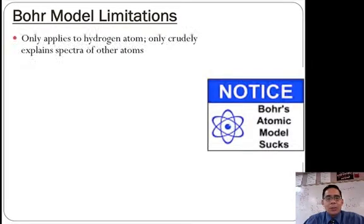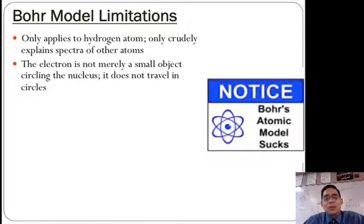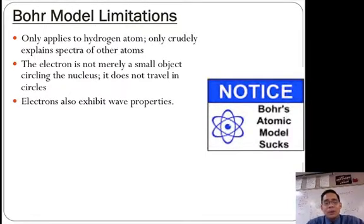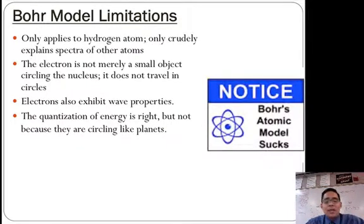So what are the limitations? Well, it only applies to hydrogen. It only crudely explains the spectra of the atoms. The electron is not merely a small object circling the nucleus. It does not travel in circles. And so we'll learn about that in the next lesson. Electrons also exhibit wave properties. And we'll talk about what that means. These are things that the Bohr model does not address. And the quantization of energy is right, but not because they are circling like planets. So we'll talk about, based on Schrodinger's work, how this changes a little bit. So it says, notice Bohr's atomic model sucks. It really doesn't. It's a good approximation. So that's it for now. Hopefully that makes sense. If you have any questions, come see me or email me.